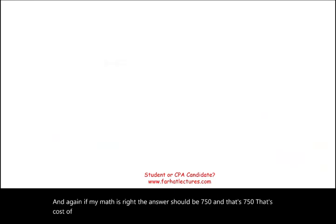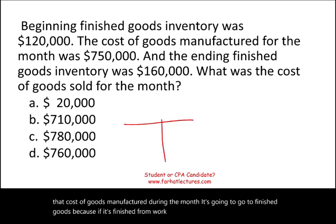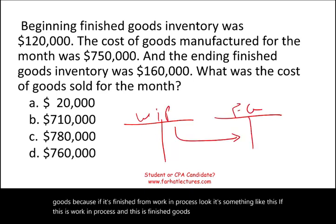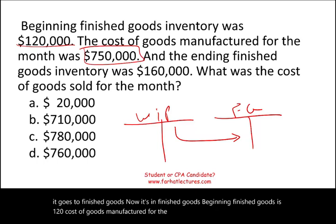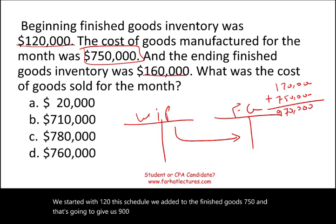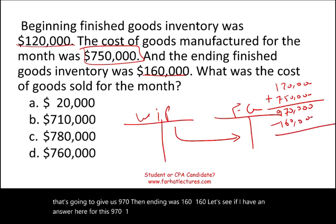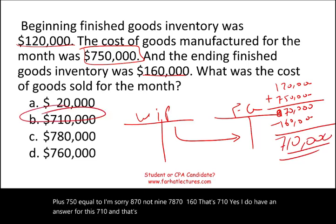That $750,000 cost of goods manufactured goes to finished goods — once finished goods leave work in process, they transfer to finished goods. Beginning finished goods is $120,000; cost of goods manufactured for the month is $750,000; that gives $870,000. Ending finished goods is $160,000. So $870,000 minus $160,000 equals $710,000, which is the cost of goods sold for the month.